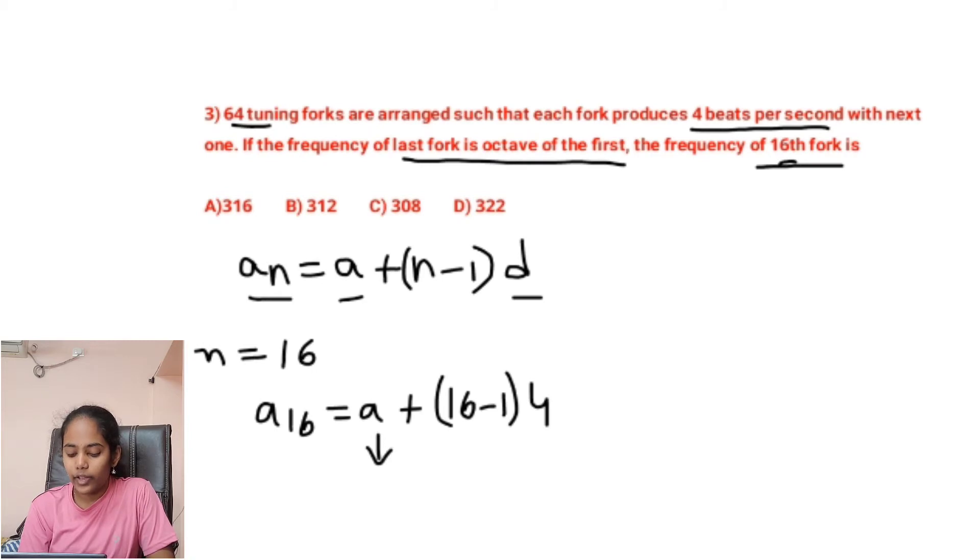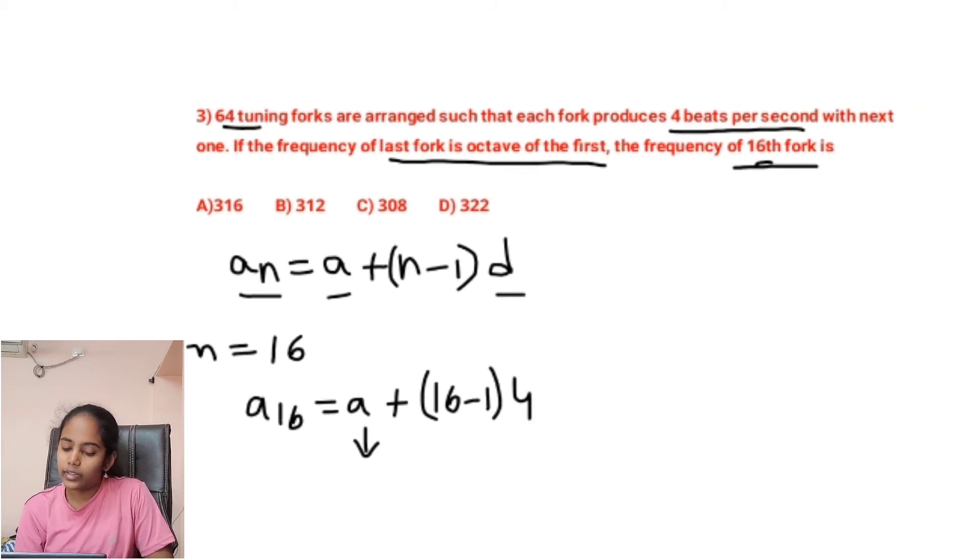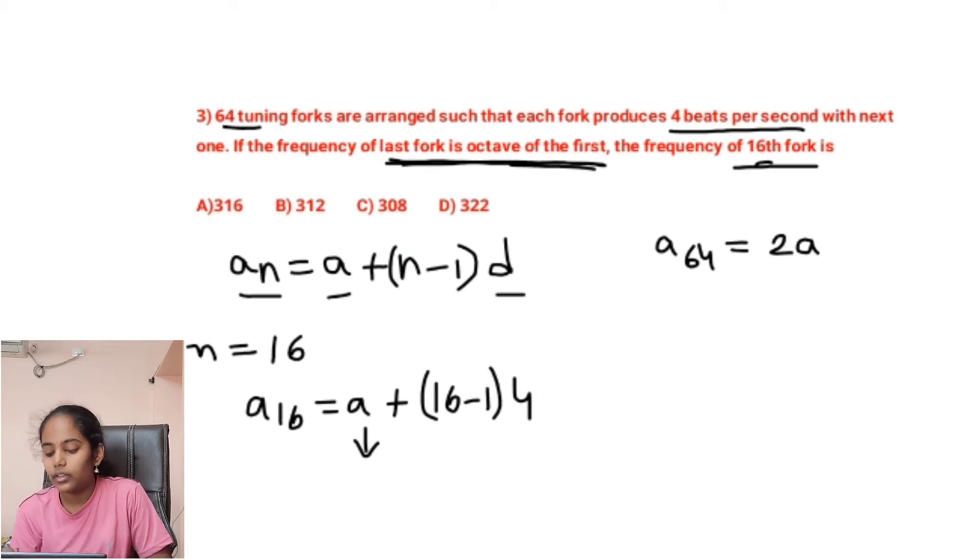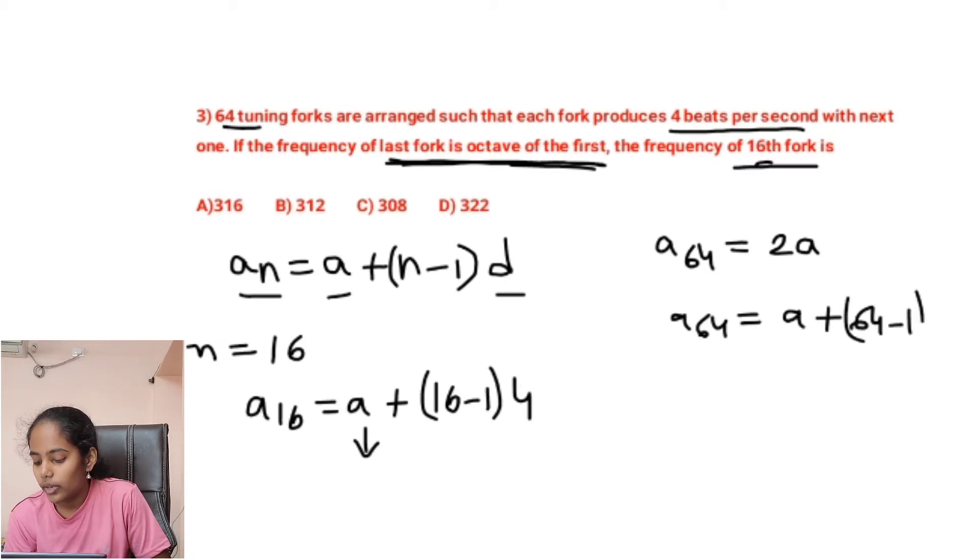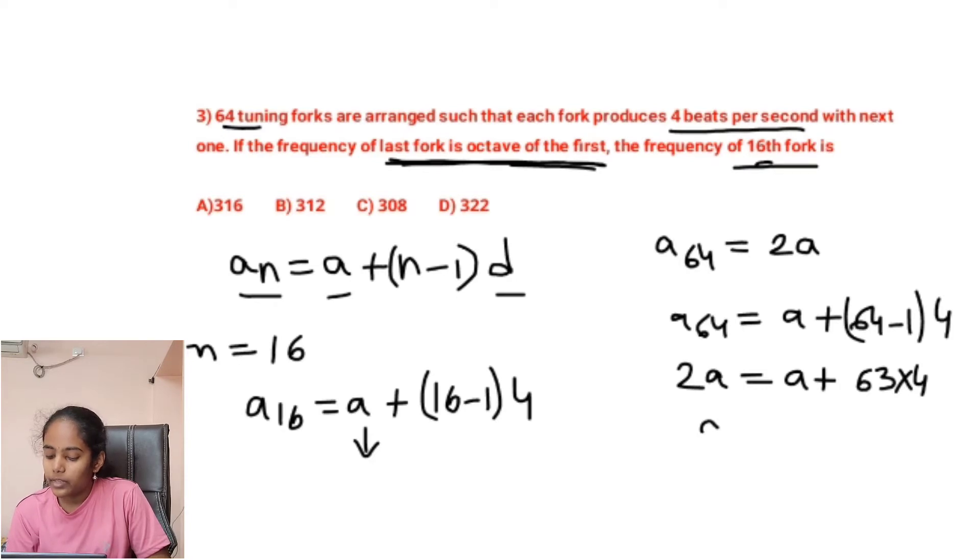Here we don't know a value, right? So to find this they gave a hint, that is the frequency of last fork is octave of the first. Here octave is nothing but twice. So a₆₄ is given as twice of a. So a₆₄ = a + (64 - 1) × 4. So here 2a = a + 63 × 4. 2a minus a becomes a.